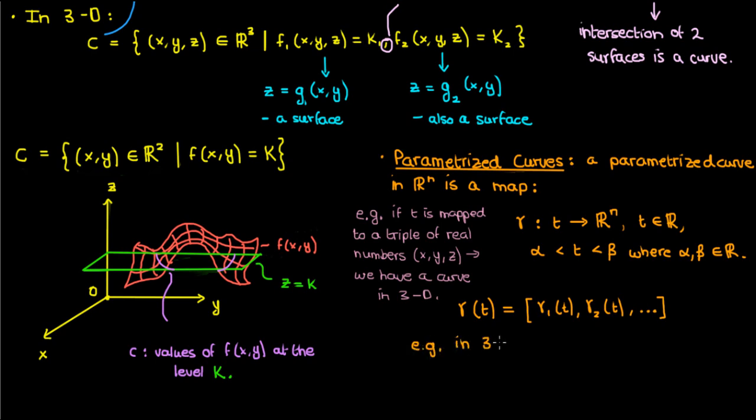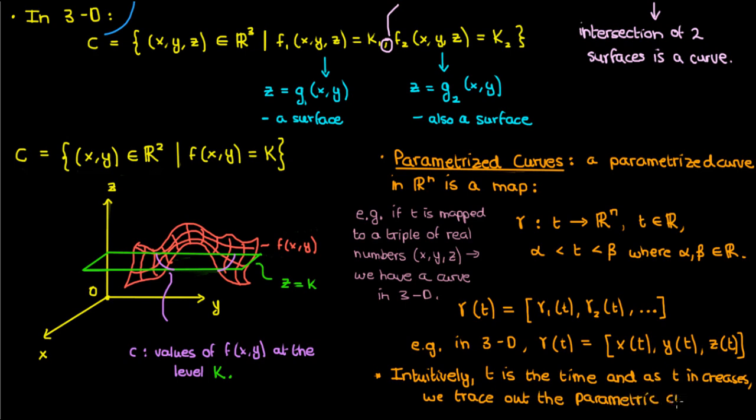For example a parametrized curve in three dimensions can be written as gamma of t equals x of t, y of t, and z of t. The nice thing about parametrized curves is that intuitively we can think of the parameter t as the time and as time increases we actually trace out the path of the parametric curve.